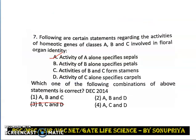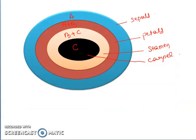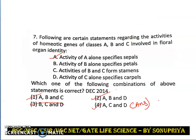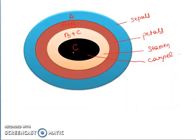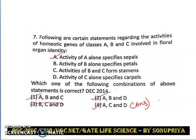Since statement B is wrong, we can eliminate the first and second options. We can conclude that the fourth option is correct without needing to read those two options — that is our answer. Let us still discuss the remaining statements. Statement C says activity of B and C forms stamens — looking at the diagram, B plus C indicates stamen formation, so statement C is correct. Statement D says activity of C alone specifies carpel — yes, class C gene is responsible for carpel formation.